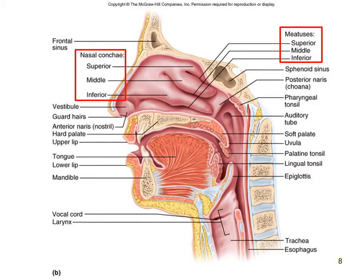Looking at the illustration, within the nasal cavity I've put a box around the nasal conchae. You can see three folds — superior toward the cranium, middle, and inferior closest to the palate. The meatuses — the passageways — are also labeled superior, middle, and inferior. Try to visualize air flowing through the vestibule, then forced through the meatuses, interacting with the conchae tissue, being warmed and humidified before making its way down to the pharynx, larynx, and trachea.